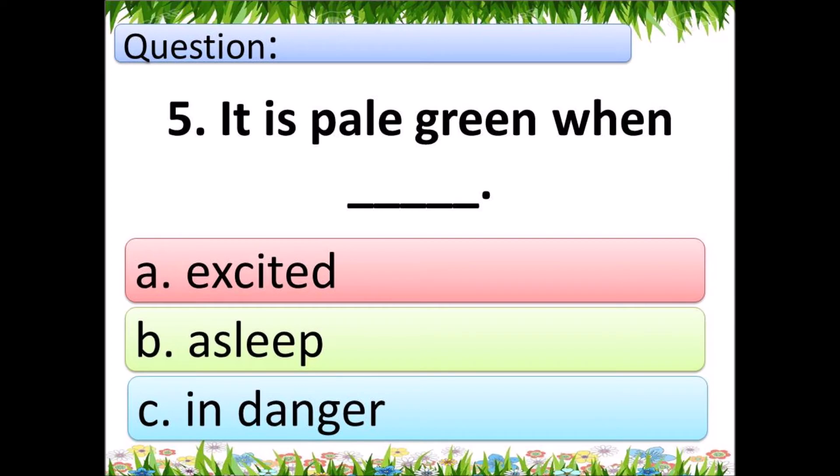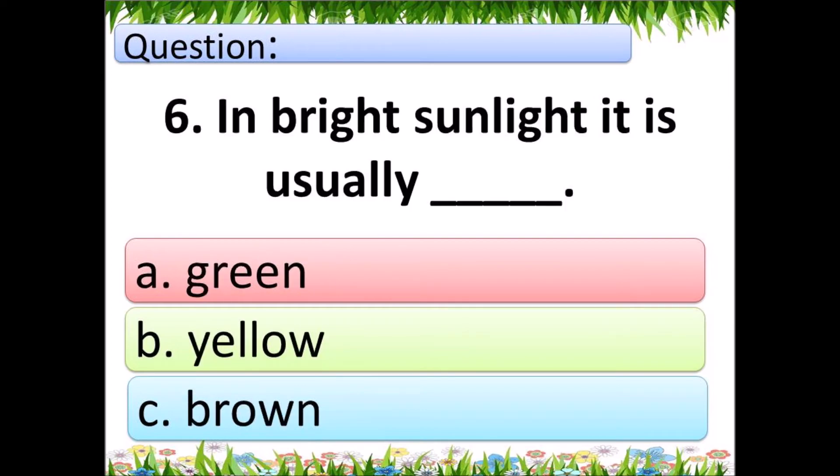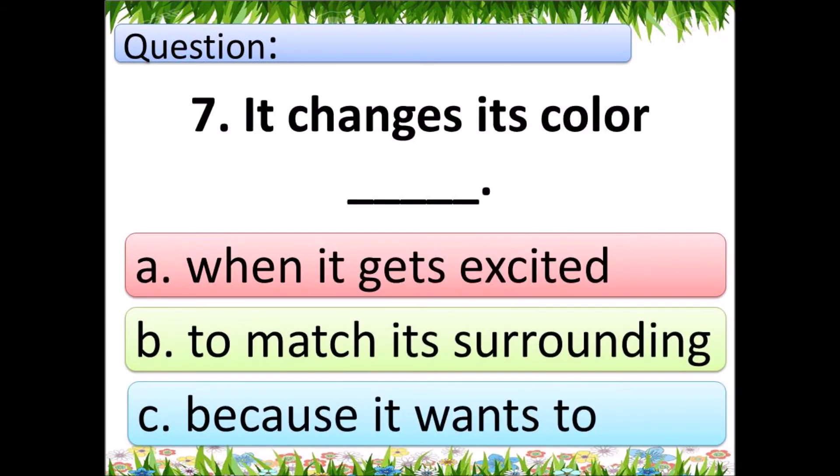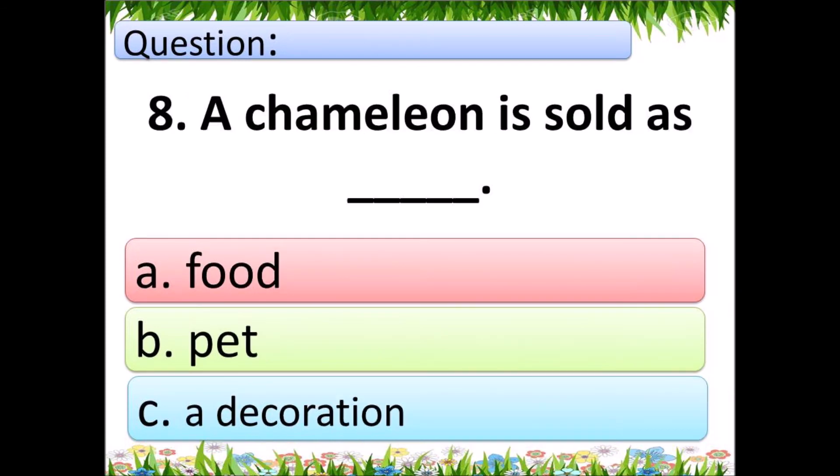Question 6: In bright sunlight it is usually what? A: green, B: yellow, C: brown. Question 7: It changes its color when? A: when it gets excited, B: to match its surrounding, C: because it wants to.